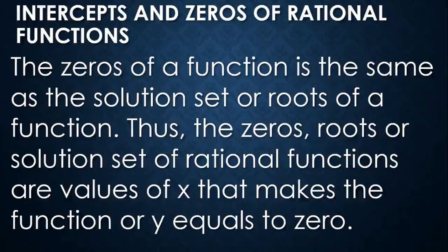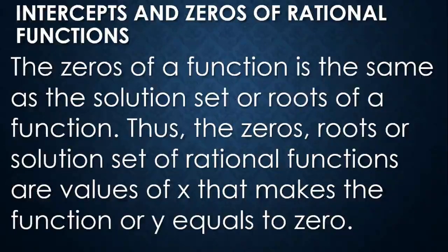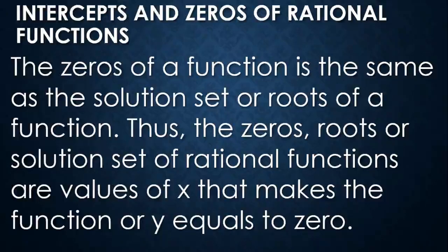The zeros of a function are the same as the solution set or roots of the function. The zeros, roots, or solution set of a rational function are values of x that make the function — or y — equal to zero. To determine the zeros, we let f(x) equal zero, which is the same as finding the x-intercept of a rational function. An example of finding the zeros and intercepts will be given in the next video. Thank you.